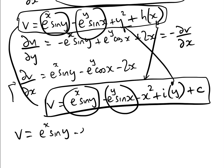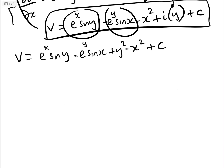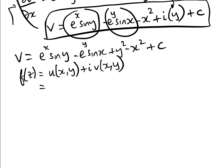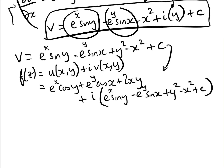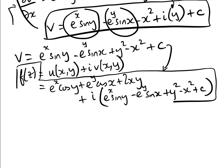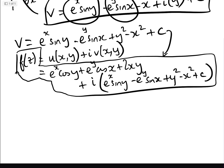Therefore, v equals e to the x sin y minus e to the y sin x plus y squared minus x squared plus a constant of integration. So our function f of z equals u of x,y plus iv of x,y, which is: e to the x cos y plus e to the y cos x plus 2xy, plus i times (e to the x sin y minus e to the y sin x plus y squared minus x squared plus constant).